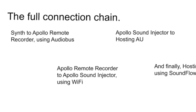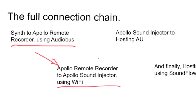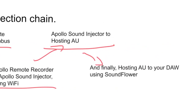Here's the full connection chain. We send audio from a synthesizer to Apollo Remote Recorder, which is on Audiobus on your iOS device. Apollo Remote Recorder then sends to Apollo Sound Injector across Wi-Fi. Once the audio reaches Apollo Sound Injector, it passes off to Hosting AU, and then Hosting AU sends it to SoundFlower, and then on to your desktop DAW.